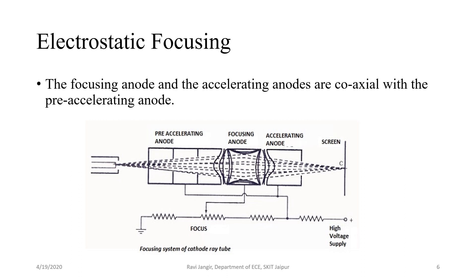The pre-accelerating and accelerating anodes are connected to the same potential that is 1500 volts while the focusing anode is connected to a lower potential that is 500 volts. On account of the difference of potential between focusing anode and the two accelerating anodes, a non-uniform field exists on each of the two ends of the focusing anode.